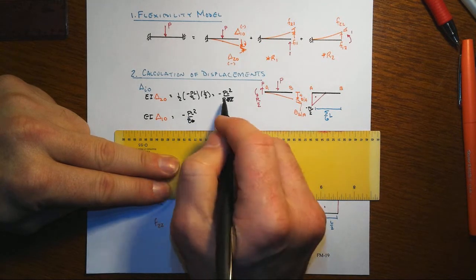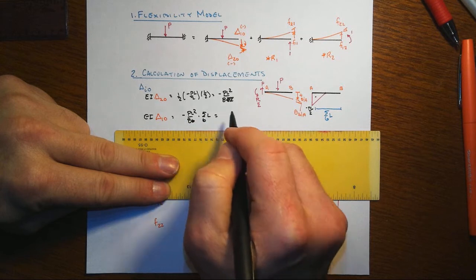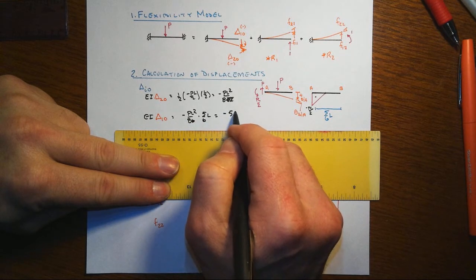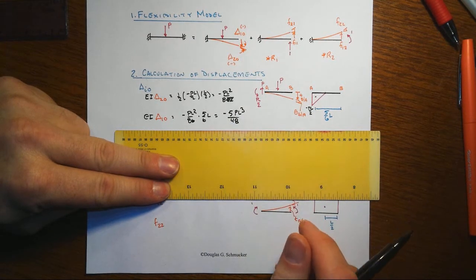So PL squared over 8 times five-sixths L, and we get minus 5 times PL cubed over 48.